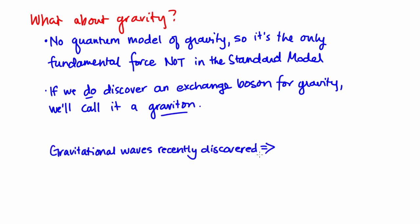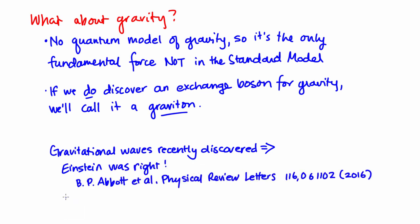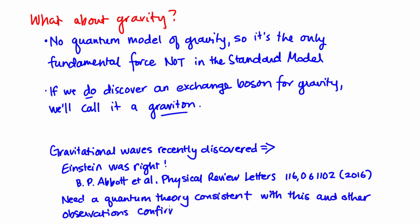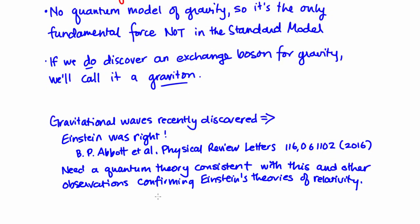Now, evidence for gravitational waves was just found by the LIGO collaboration, including some members of the ANU. This means that Einstein's theory of general relativity was right about the existence of these classical waves. But we don't yet have an idea of how to build up an experimentally verifiable quantum theory that is consistent with these observations, as well as all the other observations confirming Einstein's theories of relativity. So there's still more work to be done on this front.